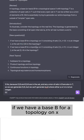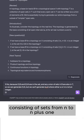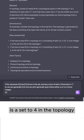So this topology should consist of specifically all open intervals that have integer endpoints. All right, number two, if we have a base B for a topology on X consisting of sets from N to N plus 1, where N is an integer, is the set (2,4) in the topology?